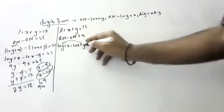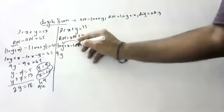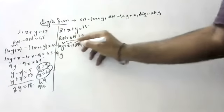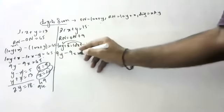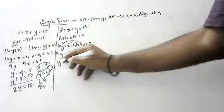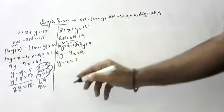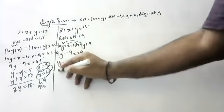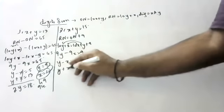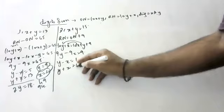Simplifying: 10Y minus Y plus X minus 10X is equal to 9, giving 9Y minus 9X is equal to 9, so Y minus X is equal to 1. And Y plus X equals 15.